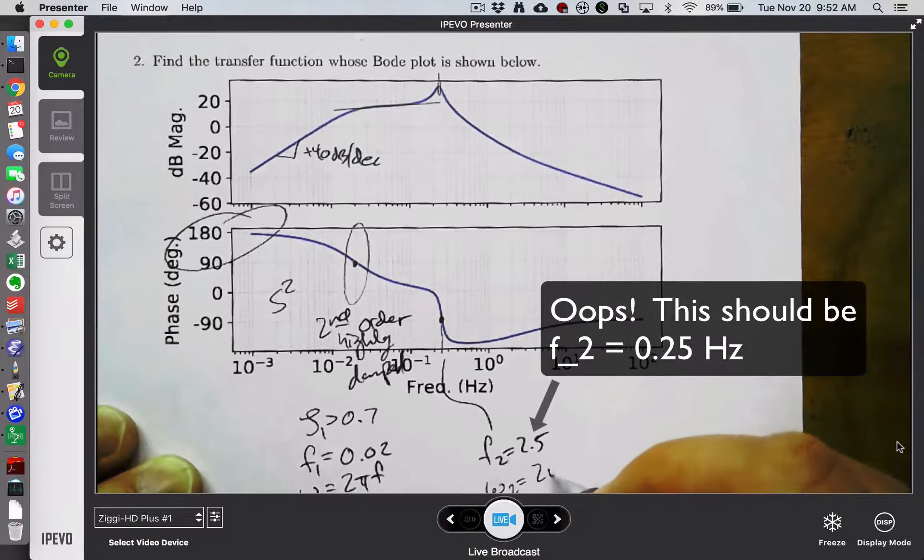Last thing that I see on this Bode plot is a phase increase of roughly 90 degrees, so I'm going to find roughly where the center of that phase change is. The slope change may not be obvious in the magnitude, but the center of the phase change appears to be at around 3 hertz. So we have a first order zero at 3 times 2 pi, and I would put that in the form s plus z over z.